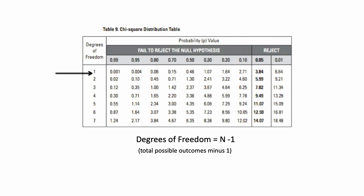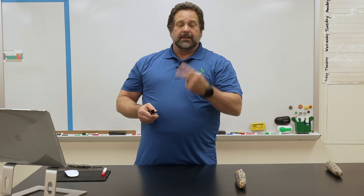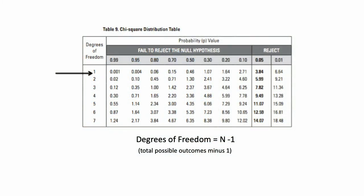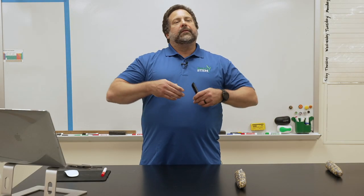To interpret that value, we look in a Chi-Square table. With only two possible outcomes — heads and tails — degrees of freedom equals the number of possibilities minus one, so 2 minus 1 equals 1. We look under degrees of freedom row 1, and our value of 1.44 falls between 1.07 and 1.64 in the table, which tells us to fail to reject the null hypothesis, since it hasn't reached the 0.05 critical value.